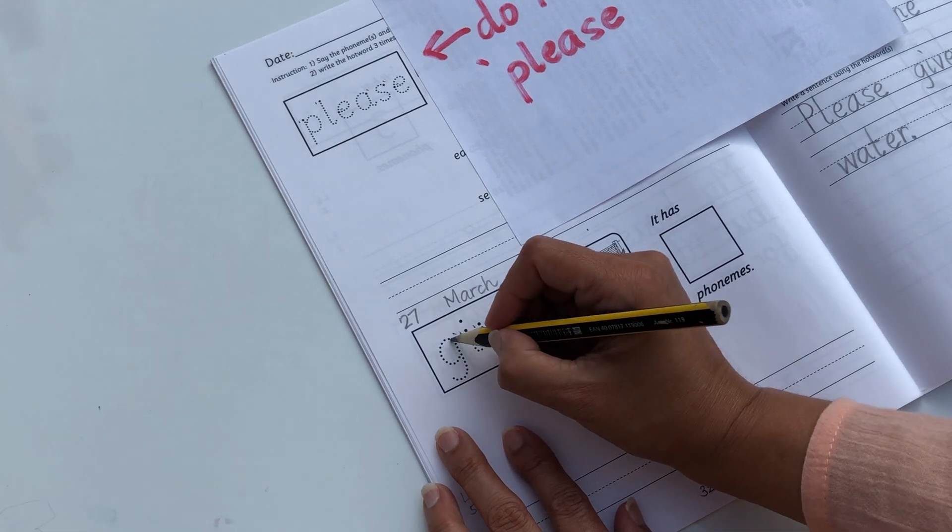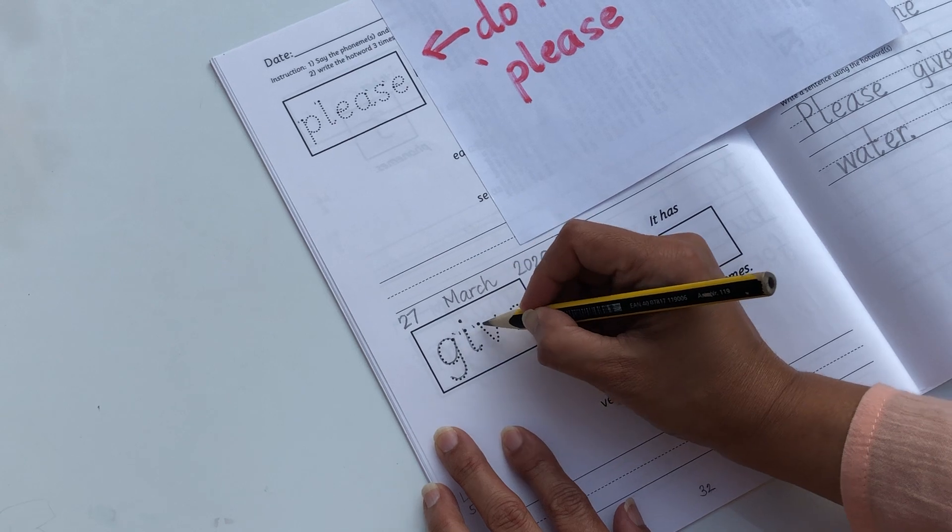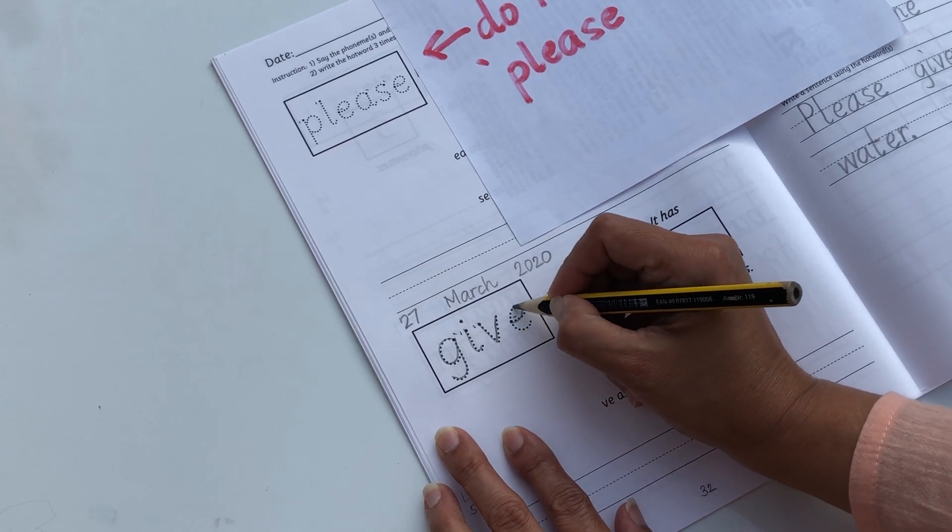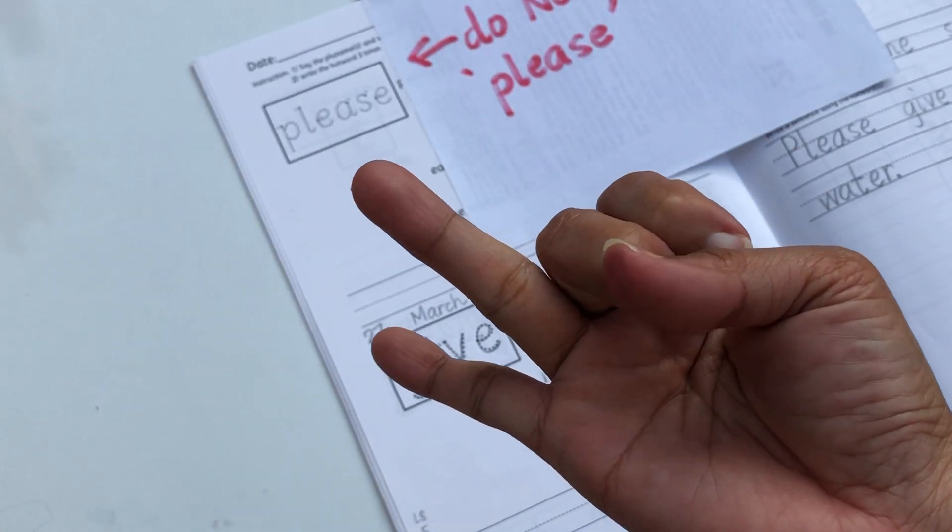Okay, trace the word: g-i-v-e. Now how many phonemes do you hear? Give: g, i, v.